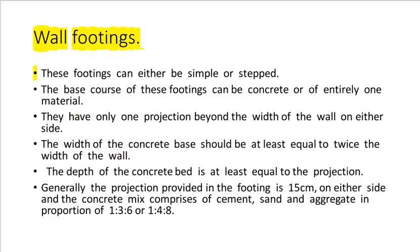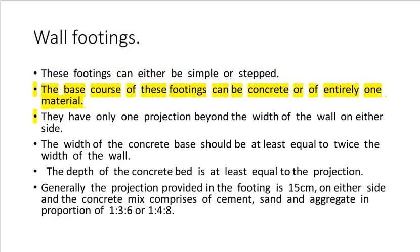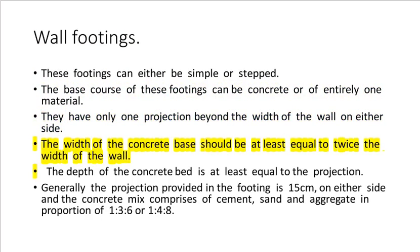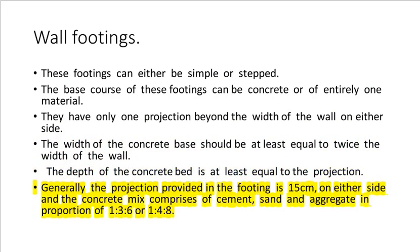Wall footings can either be simple or stepped. The base course can be concrete or of entirely one material. They have only one projection beyond the width of the wall on either side. The width of the concrete base should be at least twice the width of the wall, and the depth of the concrete bed is at least equal to the projection. Generally, the projection provided is 15 centimeters on either side, and the concrete mix is cement:sand:aggregate in proportion of 1:3:6 or 1:4:8.